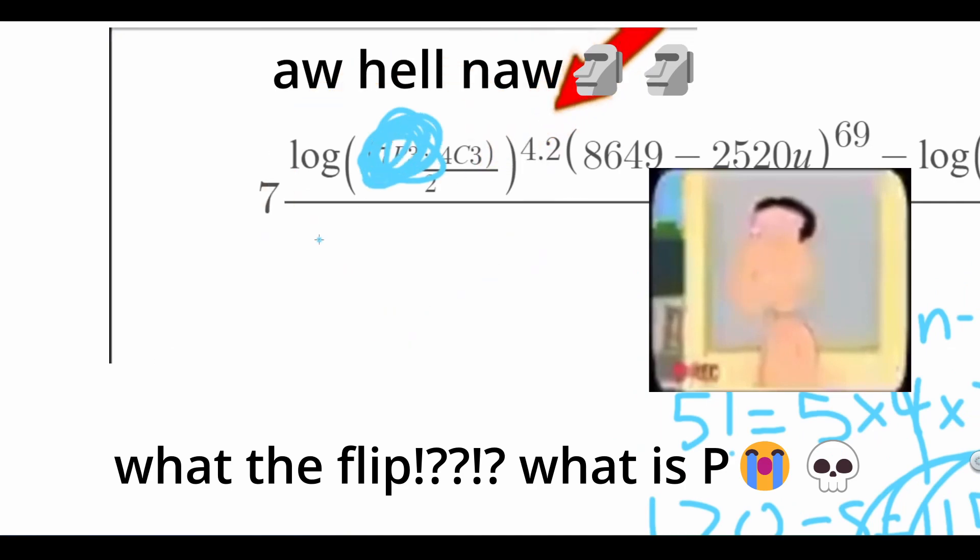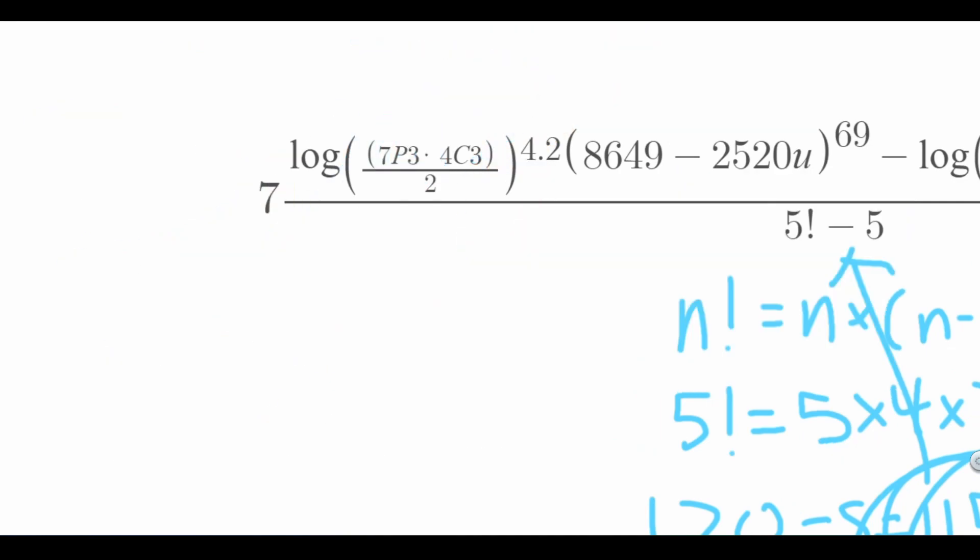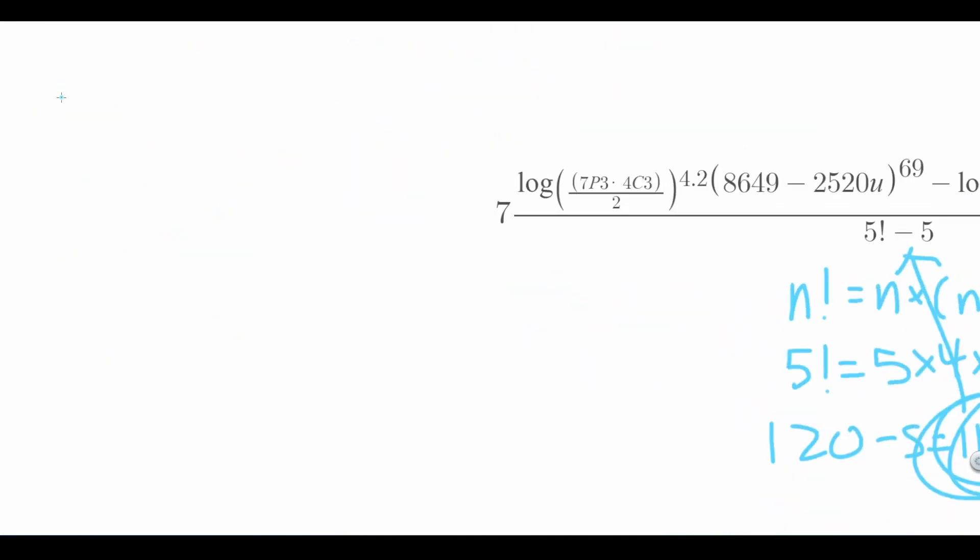Next, let's look at this. 7P3 is written as 7 permute 3. Let's say that there are seven people participating in a race and they are competing for first, second, and third place.